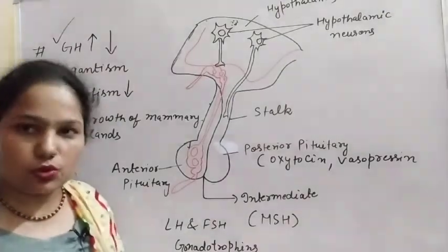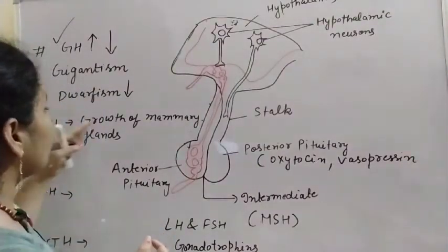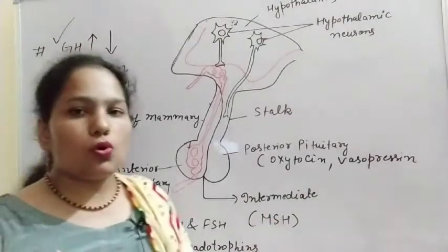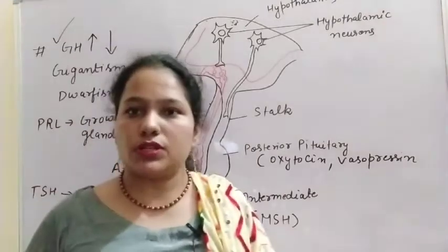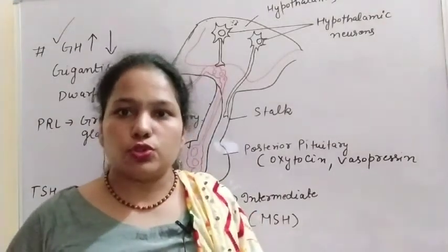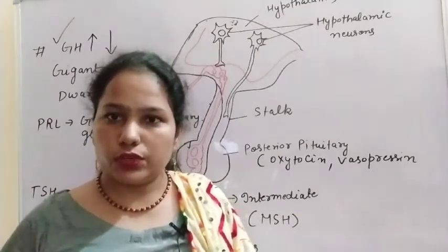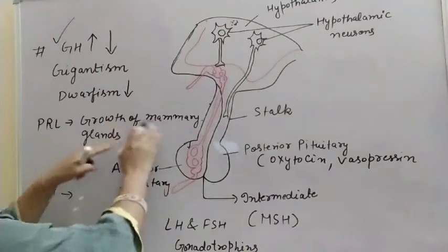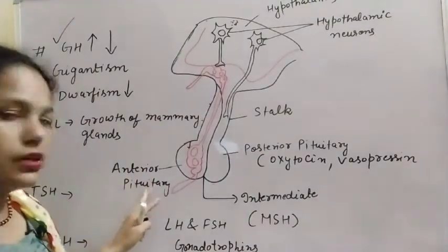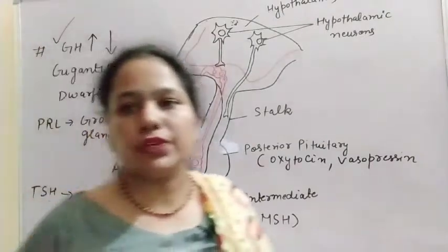The second hormone is prolactin. The word 'lactin' is related to lactose sugar. Prolactin helps in the growth of the mammary glands and also in the formation of milk. Mammary glands are characteristic of mammals, which produce milk and feed their young ones through their mammary glands.